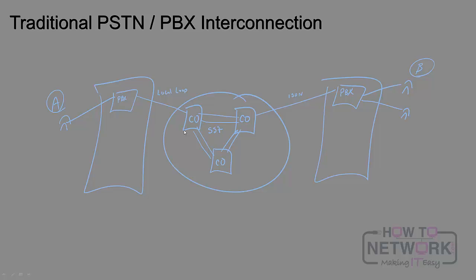There's a concept of interconnecting traditional PBXs called tie lines or tie trunks. It's really just another circuit — think of it as a point-to-point T1 where the PBX at site A is connected to the PBX at site B. They act as though they're within the same premise, reachable from premise to premise, but all that signaling is going through the PSTN.